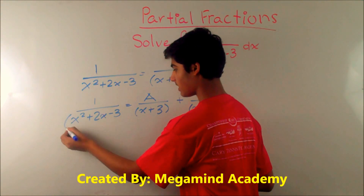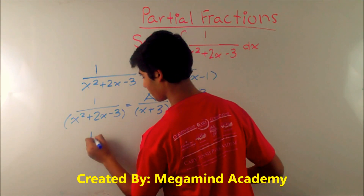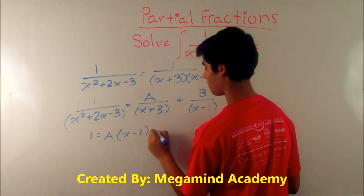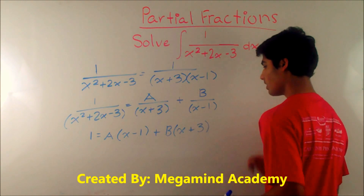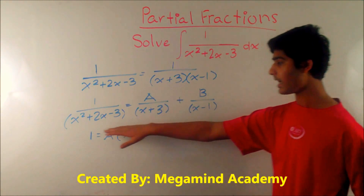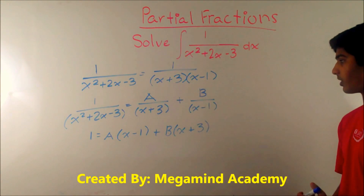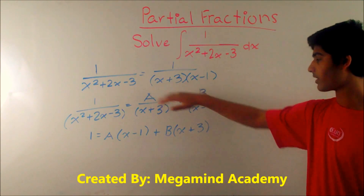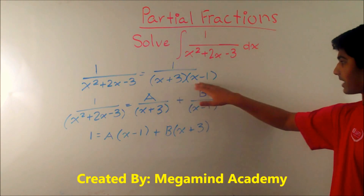Let's multiply all of the terms by the denominator. This way we get 1 is equal to A times x minus 1 plus B times x plus 3. We know that x squared plus 2x minus 3 is written as x plus 3 times x minus 1, so this term multiplied by that factor means x plus 3 cancels out and we're left with A times x minus 1.